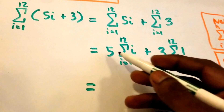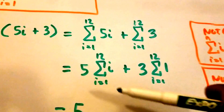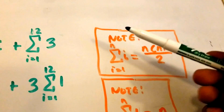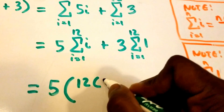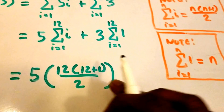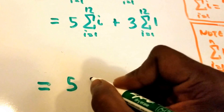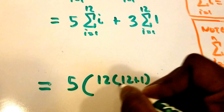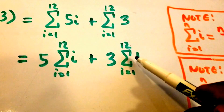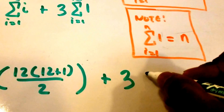Now we can continue. We have 5 times the summation from i equals 1 to 12 of i. Using the first formula, we substitute n equals 12, giving us 5 times 12 times (12 plus 1) divided by 2. For the second part, the summation from i equals 1 to 12 of 1 becomes just 12, so we get plus 3 times 12.